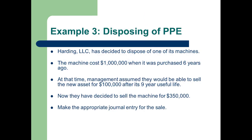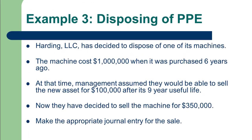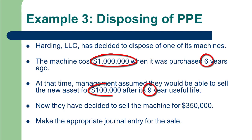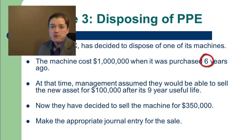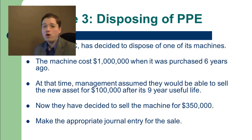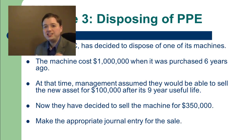Let's take a look at an example. This is Harding LLC, and Harding has decided to get rid of one of its machines. The machine cost a million dollars when they bought it six years ago. At the time, they thought they could use it for nine years and then sell it for $100,000. But by the end of this year, year six from the time we bought the asset, they realized it's better off to just sell this machine for $350,000 than trying to keep it producing for the next three years. So they've decided to sell it, and we want to make the journal entry to show the sale.